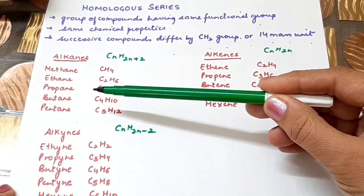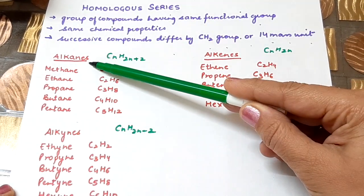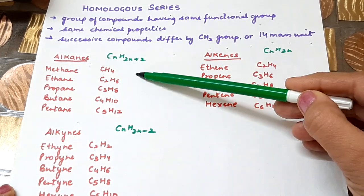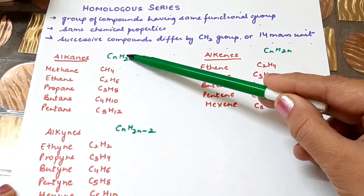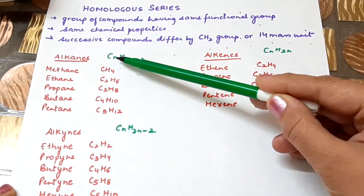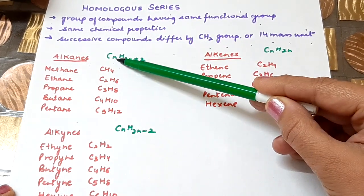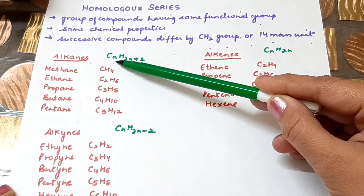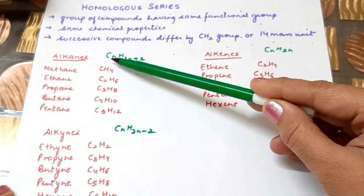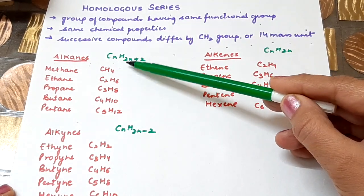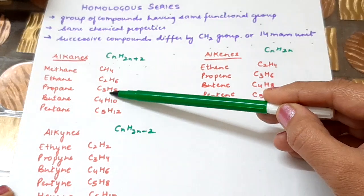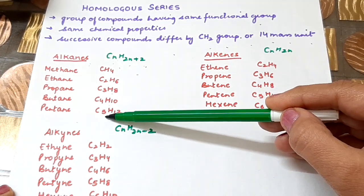For example, let's understand this with the homologous series of alkanes. The general formula is CnH2n+2. That is, if we put N=1, it becomes C1H(2×1+2), which is CH4 — methane. Same applies for ethane, propane, butane, and pentane.